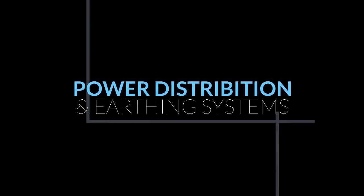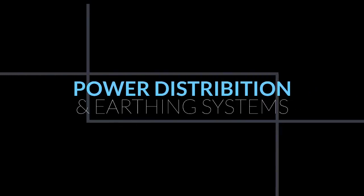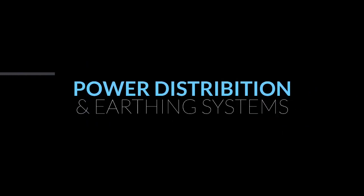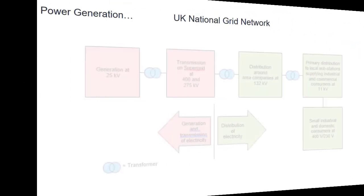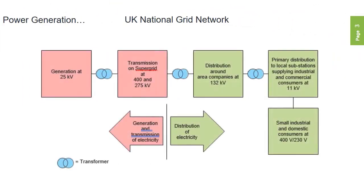Let's have a look at the UK electricity distribution system, or the UK national grid. After being generated at one of over 170 power stations — everything from wind turbines to nuclear power — at voltages of 25,000 volts AC,